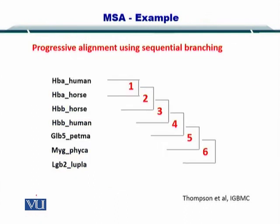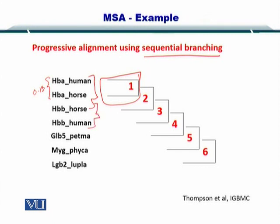Using these distances, we can create a sequential branching, wherein HBA human and HBA horse, which had a distance of just 0.13, are the closest. This is followed by HBB horse and HBB human, and the entire tree is constructed in that manner. This is called sequential branching, and you can construct it using progressive alignment.